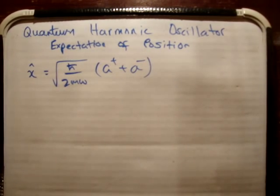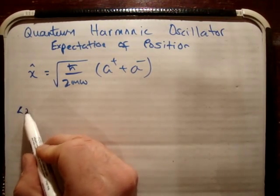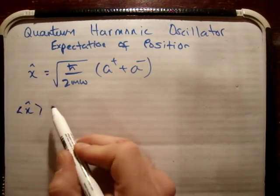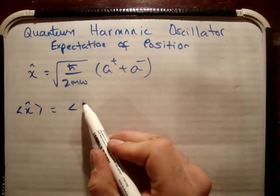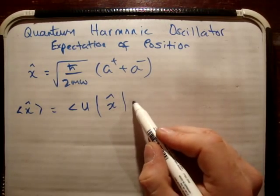So in order to get the expectation value of an observable, you need to basically do the following integral. And it's written like this, and you need to put it into a wave function. So we're going to say u, and we're going to have our operator like this.